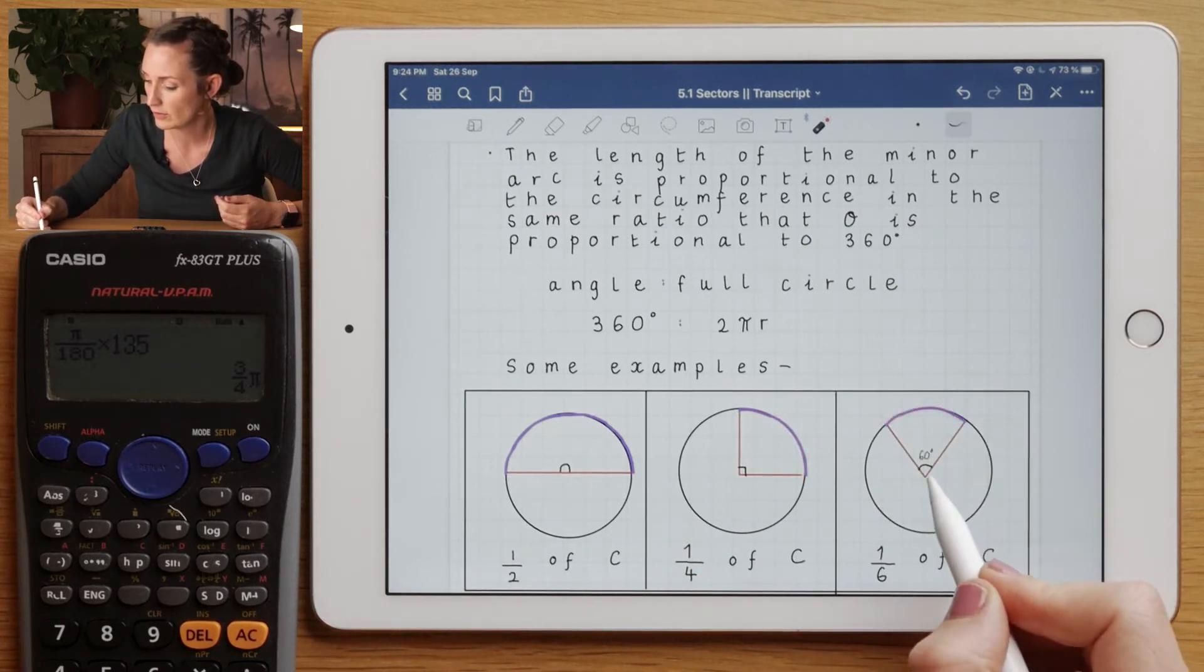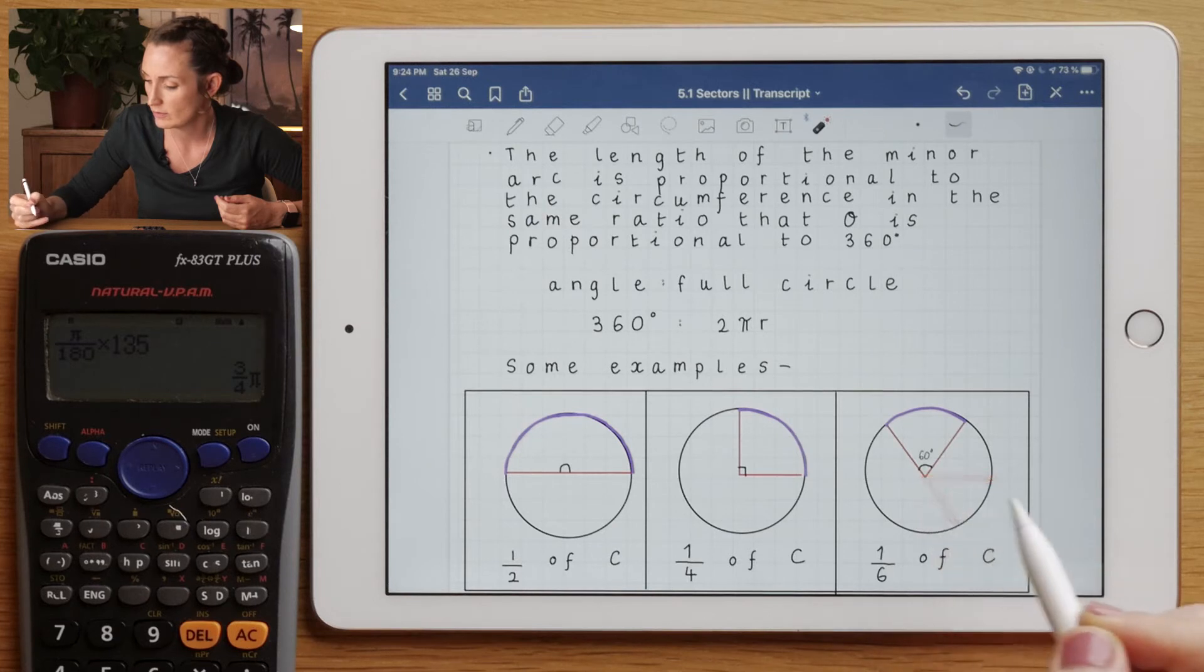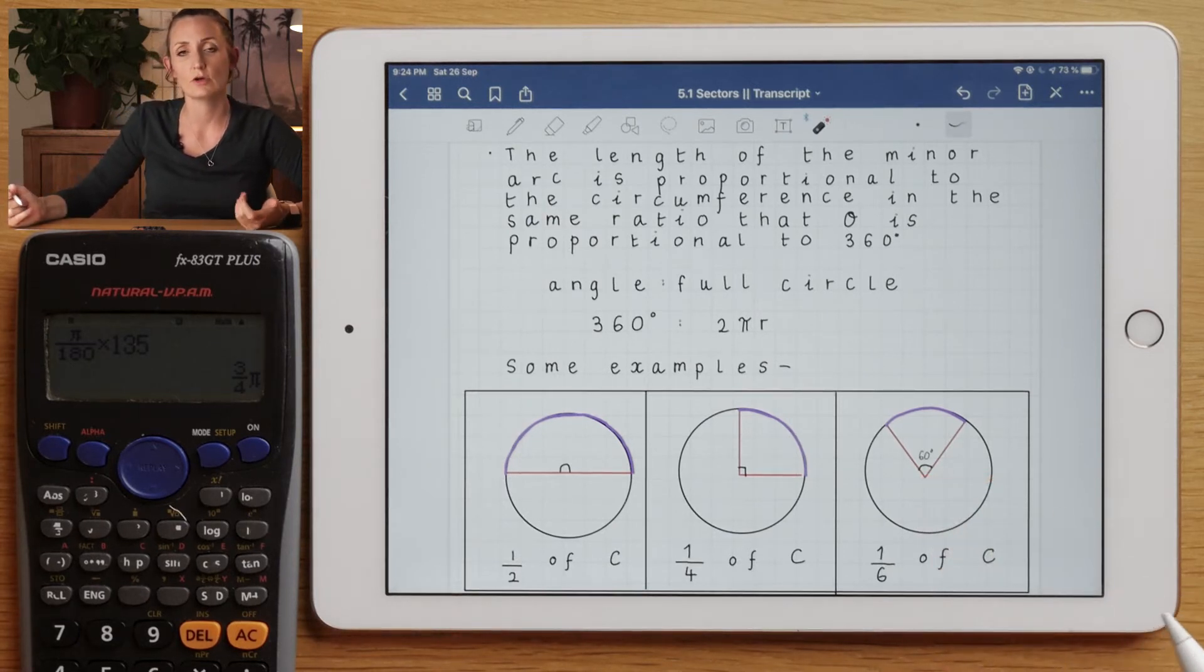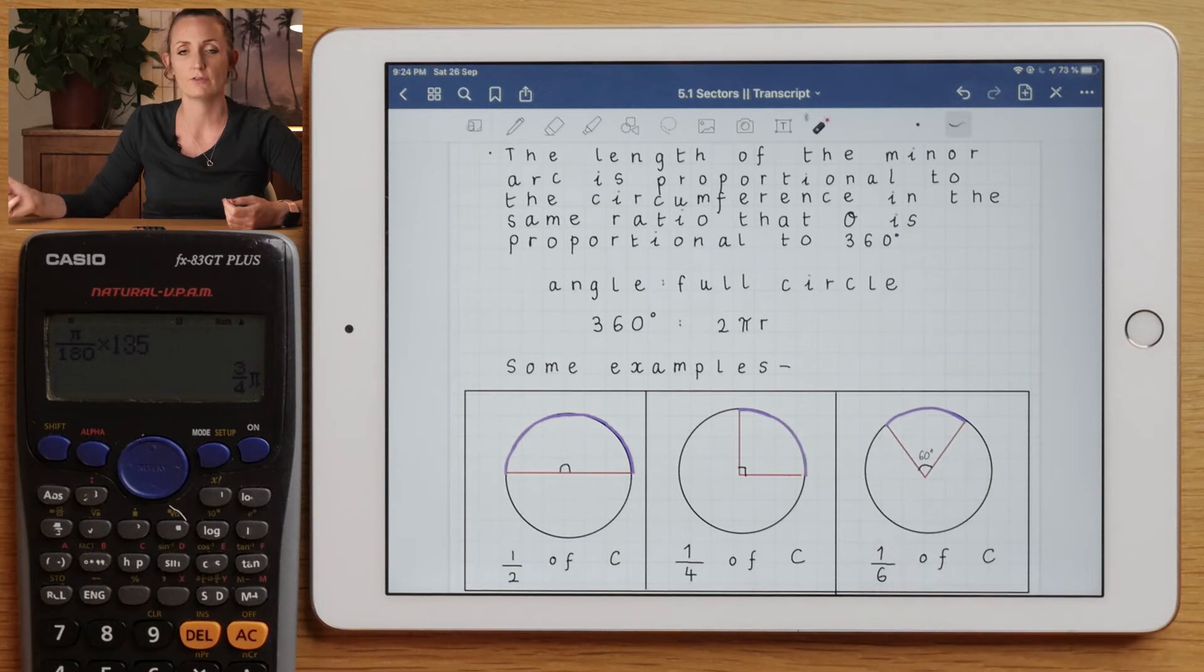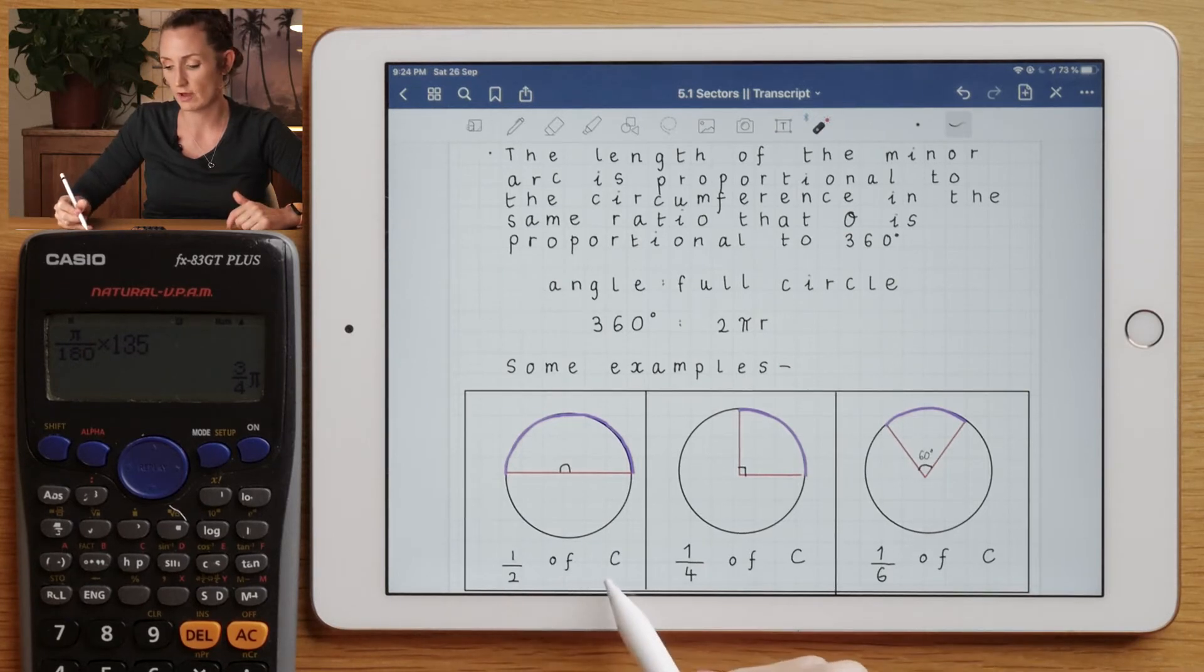Here if you've got 60°, well, you can think how many times would 60 go in. So 60 would go into 360 six times, so you'd have a sixth of the full circumference. So these ones are intuitive to us, but what we want to do is make a formula in case we have something like 58.2°, and then it's not going to be so clear what fraction of the circumference we have.